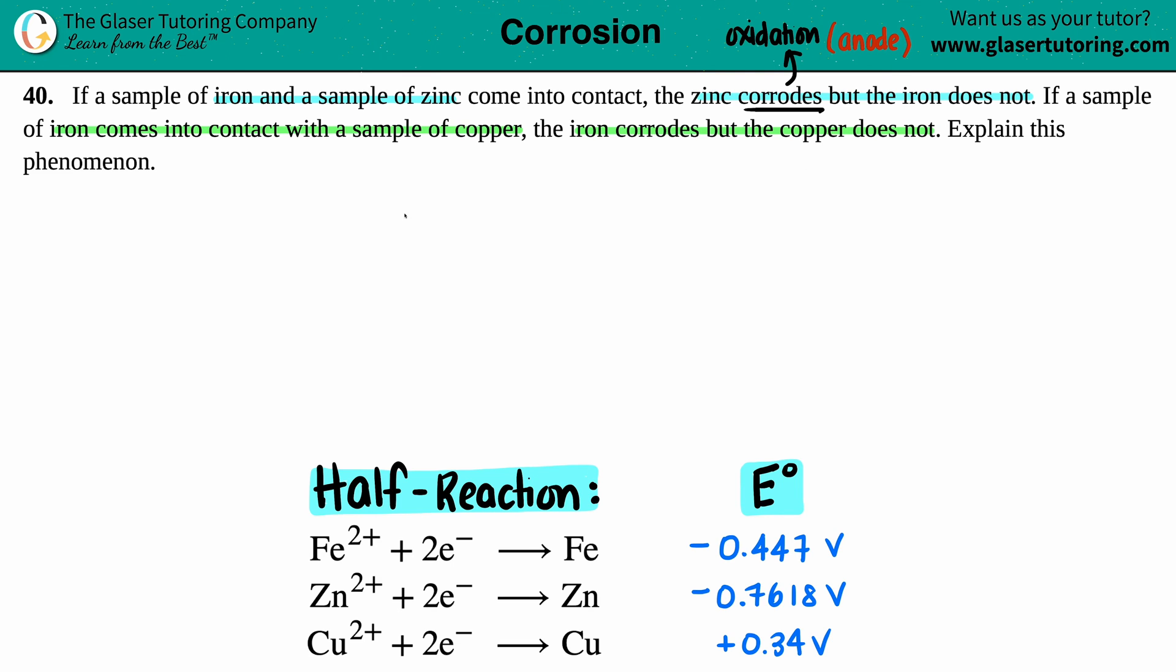For the first thing, they're saying that we have a sample of iron and zinc. So here's my sample number one, and we have iron which is Fe and zinc which is Zn. Now we can only answer this question by knowing the half reactions. They didn't say specifically what state iron, zinc, and copper was, so I'm going to assume that all of these have a plus two charge.